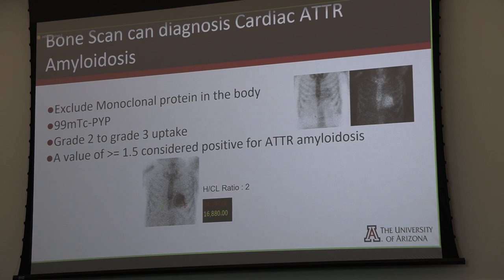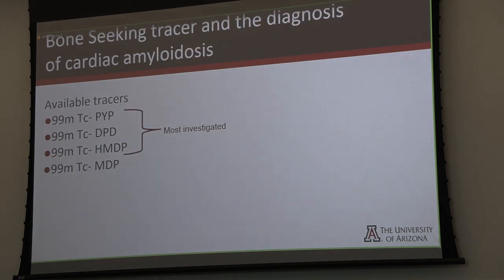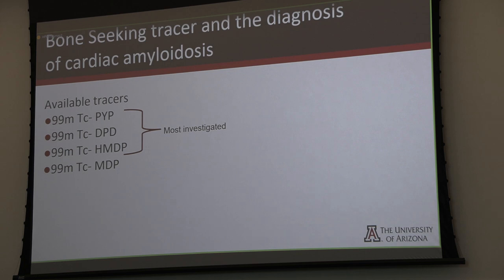We have multiple tracers: PYP, DPD, HM-DP, and MDP. For those not doing oncology, in the United States, MDP is the one we use. So compared to the study shown here about the prevalence of incidental findings of ATTR, it would be really hard to replicate because we're not using any of the other tracers routinely — we're using MDP. PYP is the only tracer here that is FDA approved.